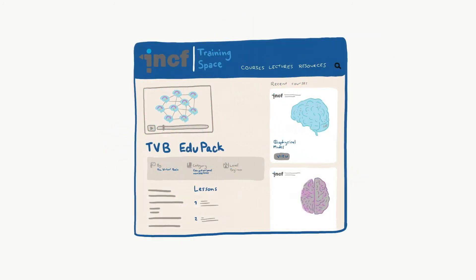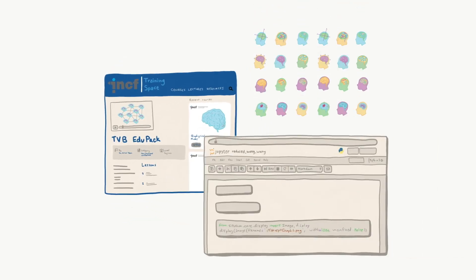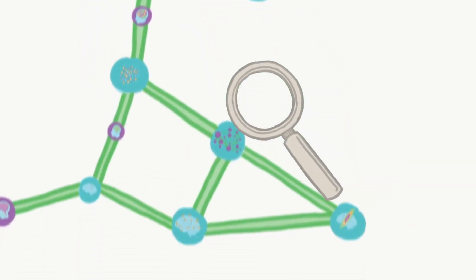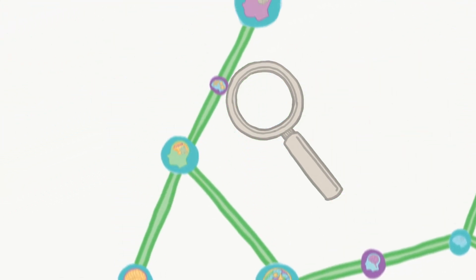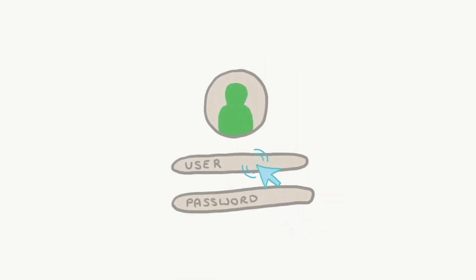The INCF training space includes a dedicated area for the Virtual Brain, where a rich multitude of didactic use cases are available with video tutorials, Jupyter Notebooks, and example data sets. All software and data sets in the Virtual Brain ecosystem are registered and annotated in the Knowledge Graph to make them easier to locate and use. The tools are functional and ready to use, and you can be the next user.